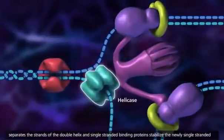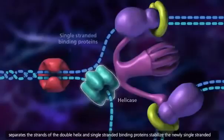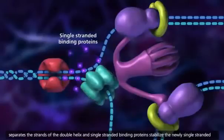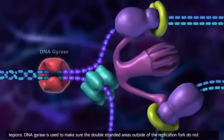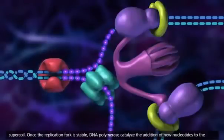Helicase separates the strands of the double helix, and single-stranded binding proteins stabilize the newly single-stranded regions.